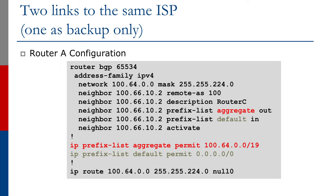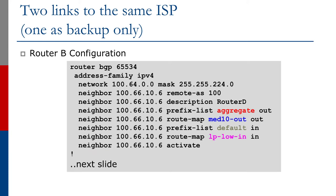Looking at the Cisco IOS configuration for router A — the primary path on the end site — router A announces the aggregate, accepts the default route from the upstream provider, and originates the slash 19 address space. For router B, we see the same prefix list letting the aggregate out to the upstream provider, and another prefix list accepting the default route in. However, router B additionally has two route maps: one called 'med-ten-out' applied on outbound announcements, and another called 'lp-low-in' applied on incoming announcements.